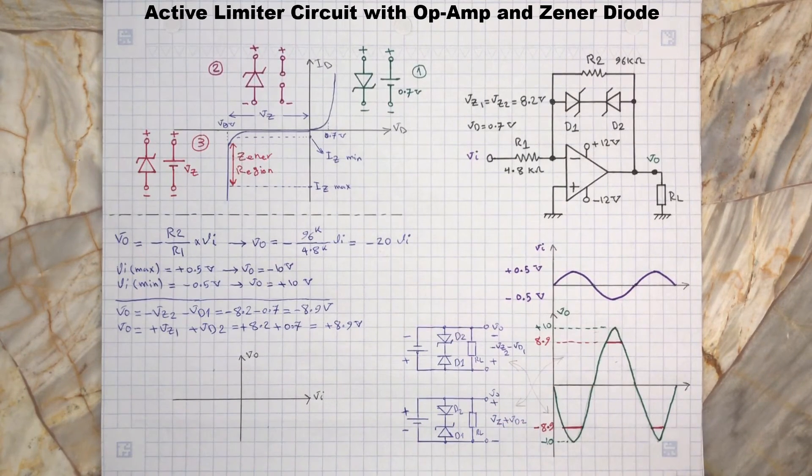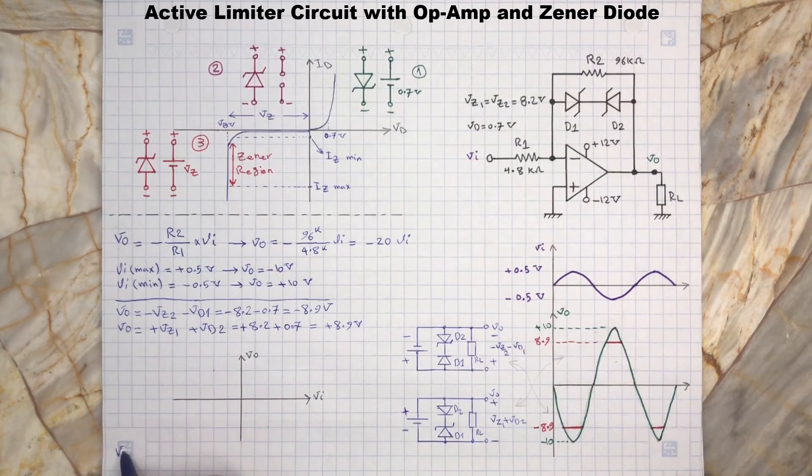We can also calculate at what input levels the output voltage will reach negative 8.9 and positive 8.9 volts. Here's how we can determine when Vo equals 8.9.